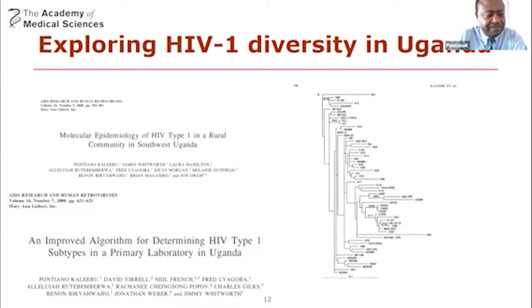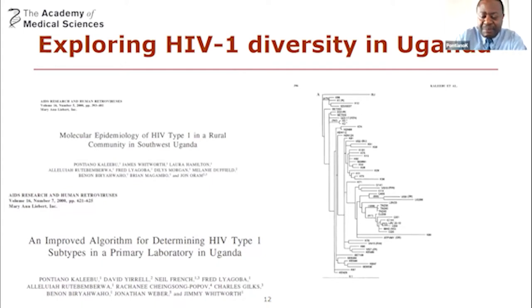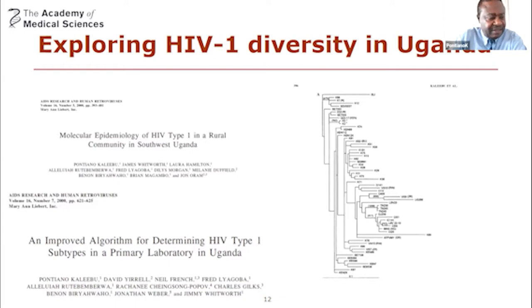We used different techniques. Initially we were using simple serology, using a region of the HIV — the V3 loop — to serotype HIV. We moved into heteroduplex mobility assays, and eventually we set up sequencing here at my institution.